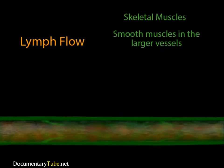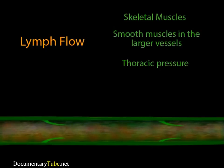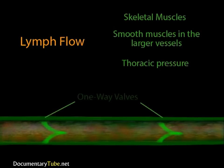Also, when we breathe, pressure changes occur in the thoracic region. When the thoracic pressure drops, that tends to pull lymph into the thoracic duct. One-way valves prevent the lymph from flowing backwards.